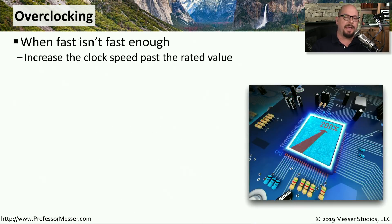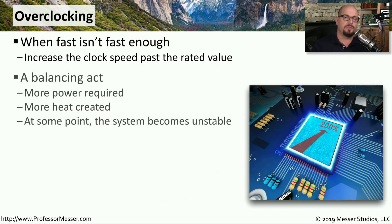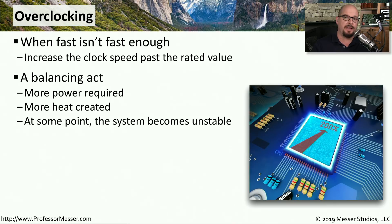When Intel and AMD build their processors, they build and test them to operate at a particular clock speed. But some computer enthusiasts have found they can increase this clock speed and get more performance out of their CPUs. This process of increasing the clock speed is called overclocking. Overclocking allows you to get more performance, but it also uses more power, creates more heat, and at some point, as clock speeds get higher and higher, your system becomes unstable.